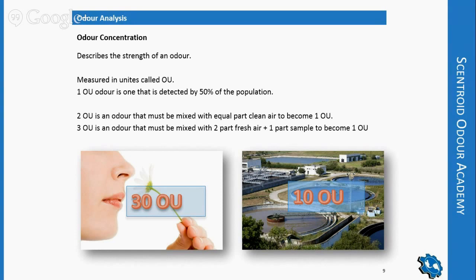The flower is about 30 odor units. The wastewater treatment plant outside is 10 odor units. If you go very close to the wastewater treatment plant, just above the lagoon, the number can be much higher — hundreds of thousands maybe.